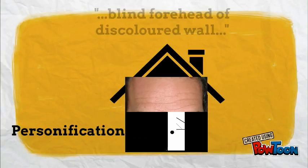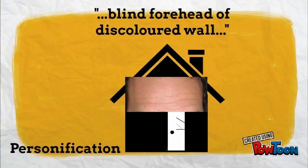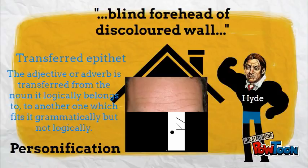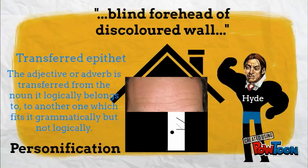The building is personified further through the description of the second story as having 'a blind forehead of discoloured wall.' The transferred epithet 'blind' conveys a sense of disability that mirrors that of Hyde — he seems to have something wrong with his appearance, as Enfield says, just as a forehead cannot be blind as it lacks eyes. The transferred epithet just seems wrong, as does Hyde.